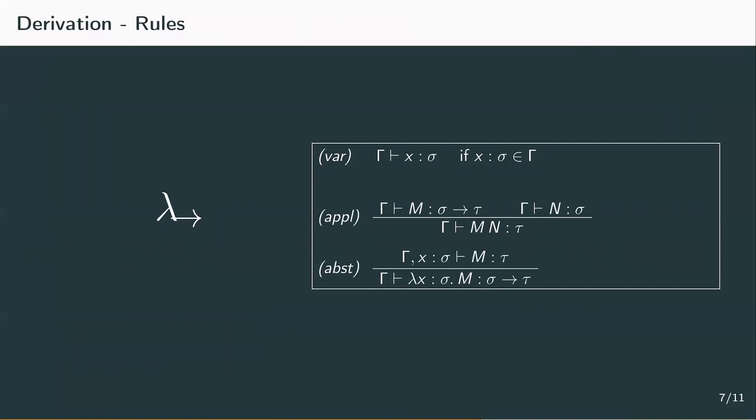The variable rule says: if we have a declaration in the context gamma — like 'term variable x has type sigma' — then gamma yields x has type sigma. To put it simply, if x has type sigma, then x has type sigma. These are going to be our axioms.